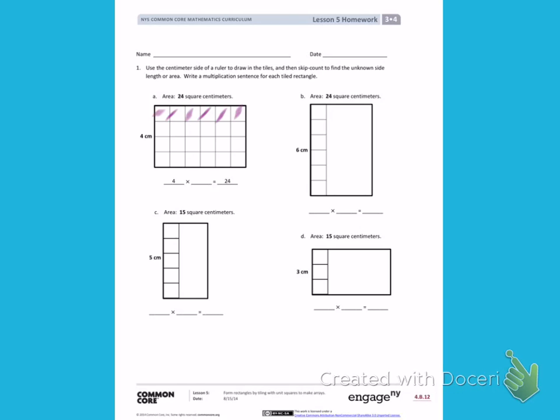When there are 6 squares going across the top, I know that that measurement is 6 centimeters. So my missing measurement is 6, telling me 4 times 6 equals 24.